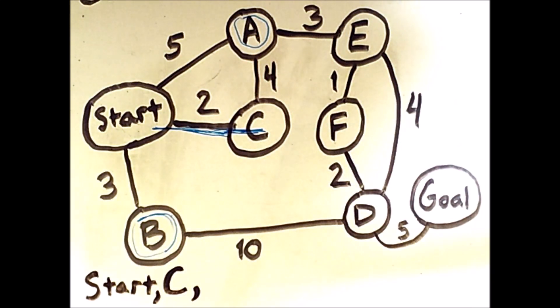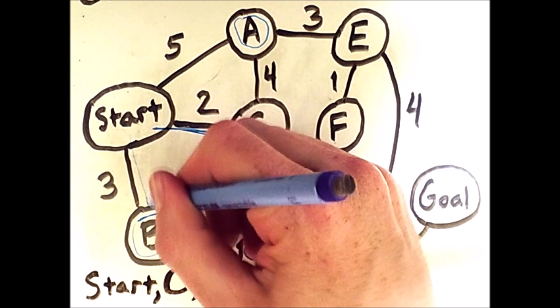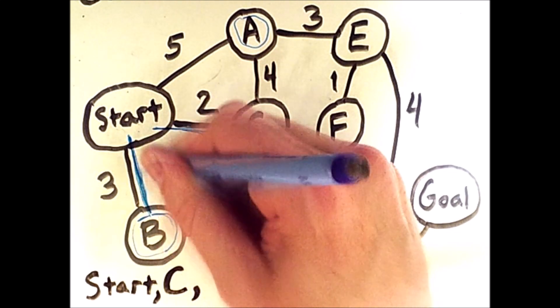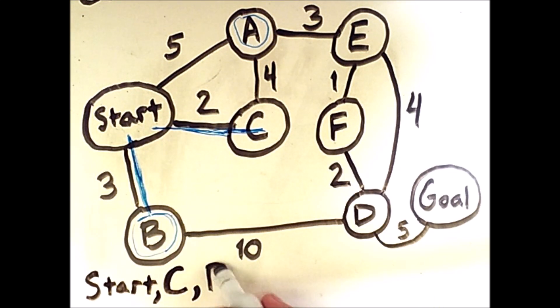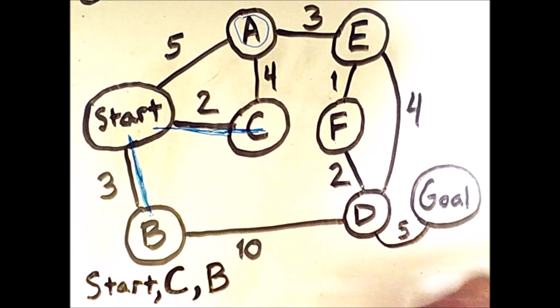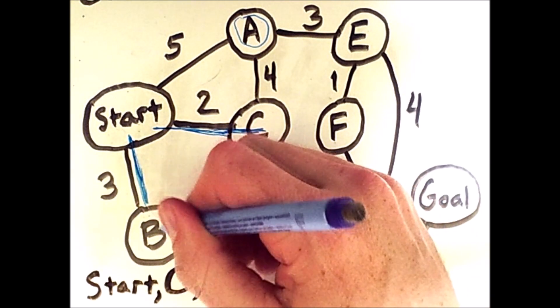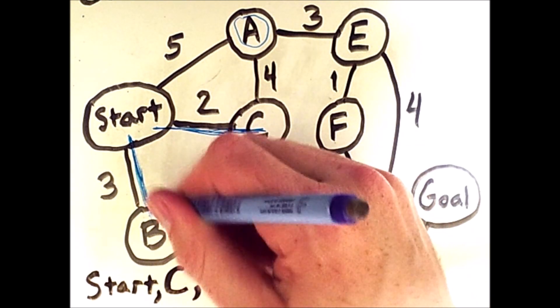Because 3 is the cheapest available option at this point, we're actually going to check B next, so B is added to our list of visited states. It is no longer on the fringe, but a path to it exists that starts at the start and goes straight to B.